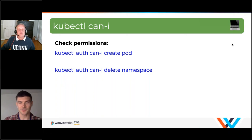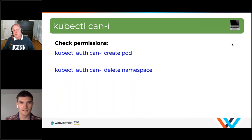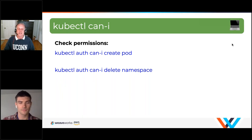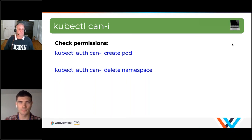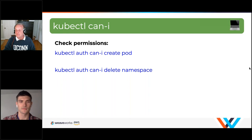The kubectl auth can-i command is actually built into kubectl itself. Based on the kubeconfig you have — and in the case of AWS, the ARN and credentials — it tries to execute using that user and comes back true or false. It's a very nice way to do an audit on things you've configured and test that someone can create a pod but can't delete a namespace, for example.